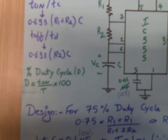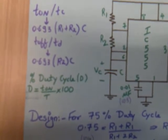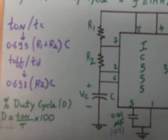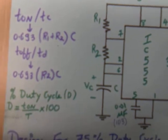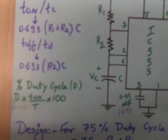Duty cycle is T_on upon total time period T into 100, where T_on is 0.693(R1 + R2) × C, and T_off is 0.693R2 × C.